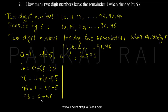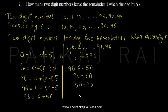Now let us take 6 to the other side. So that will be 96 minus 6 equals 5n, so 90 equals 5n, or 5n equals 90, which gives n equals 90 over 5, so we are getting n as 18.